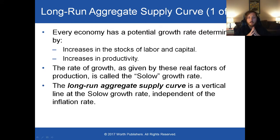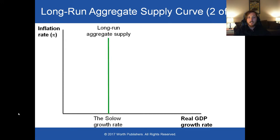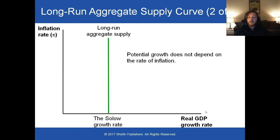So the economy has a growth rate determined by its ideas, capital, and labor. This is the Solow growth rate. We're going to represent that as just a line — we call it the long-run aggregate supply curve. Very simply, it's a straight up-and-down line. The real GDP growth rate, the potential growth in an economy, is some number, say 3.2%.